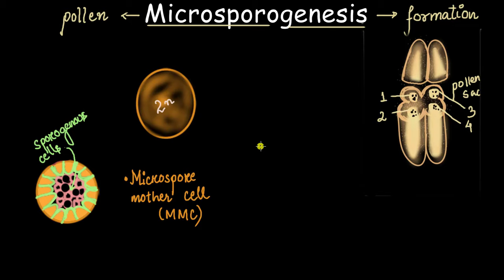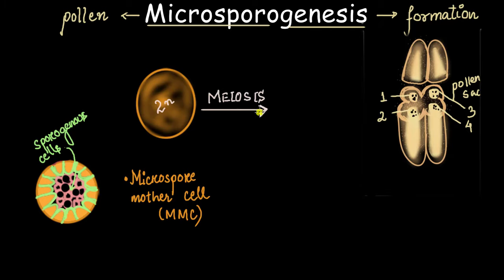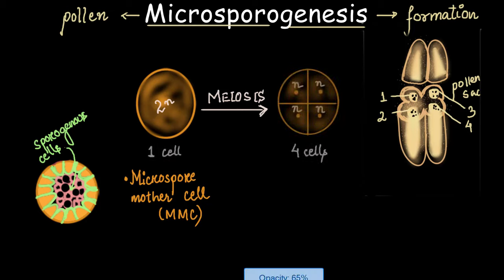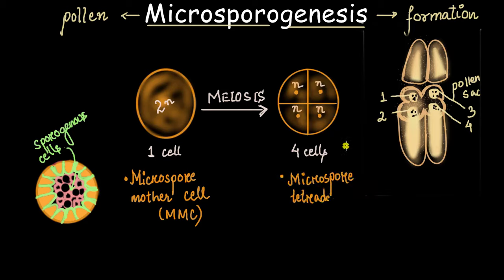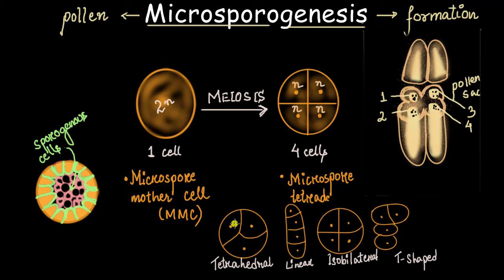This microspore mother cell will now undergo meiosis to give rise to male gametes. After meiosis, we get four haploid cells, and these four cells are called the microspore tetrad. This microspore tetrad can be arranged in different ways: if arranged as a tetrahedron it is called tetrahedral; there is also a linear arrangement, an isobilateral arrangement, and a T-shaped arrangement. The most common one is the tetrahedral shape.